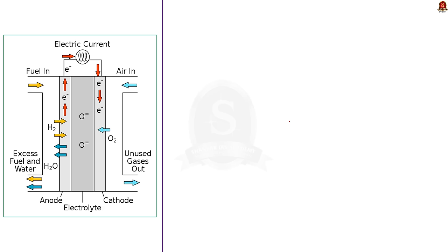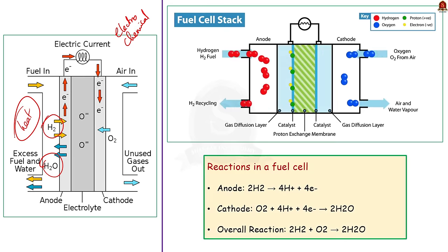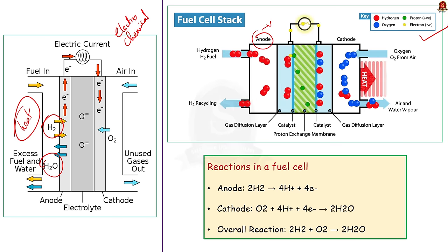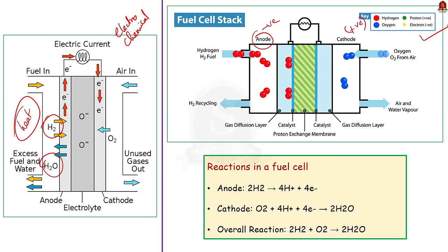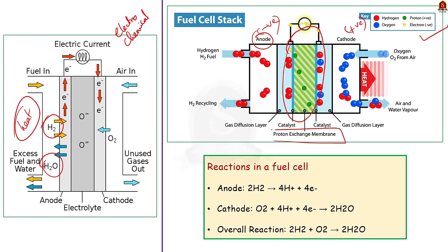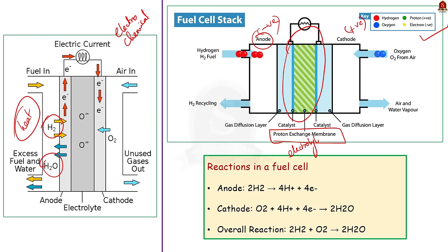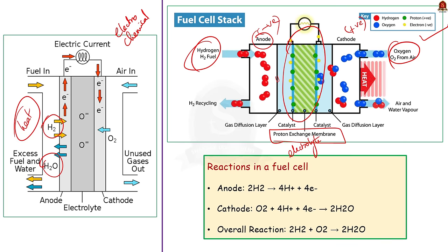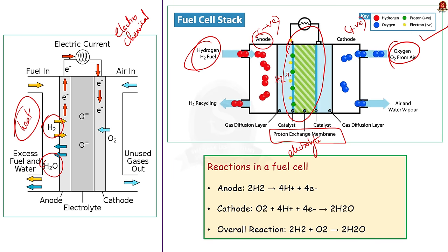A hydrogen fuel cell operates through an electrochemical reaction. It converts the chemical energy stored in hydrogen directly into electrical energy. This reaction also produces water and heat as byproducts. A fuel cell consists of two electrodes — a negative electrode or anode and a positive electrode or cathode — placed around an electrolyte. The electrolyte used in the hydrogen fuel cell is a proton exchange membrane, or PEM. Hydrogen is fed to the anode and air is fed to the cathode. At the anode, hydrogen molecules (H₂) are split into protons or hydrogen ions and electrons with the help of a catalyst like platinum.